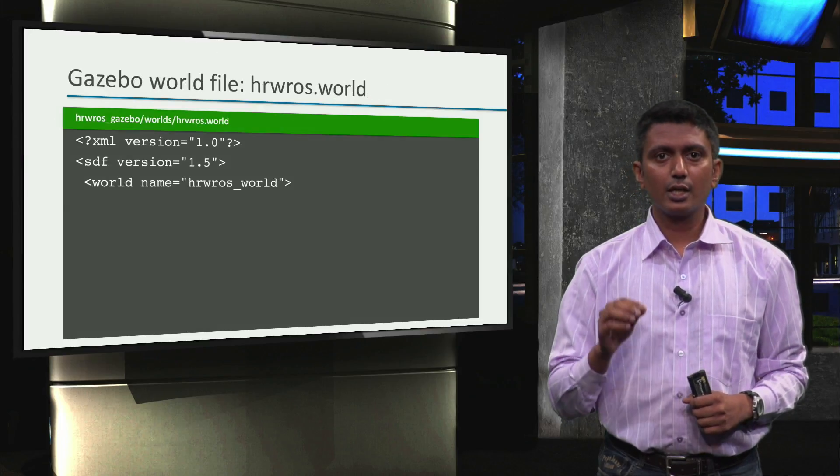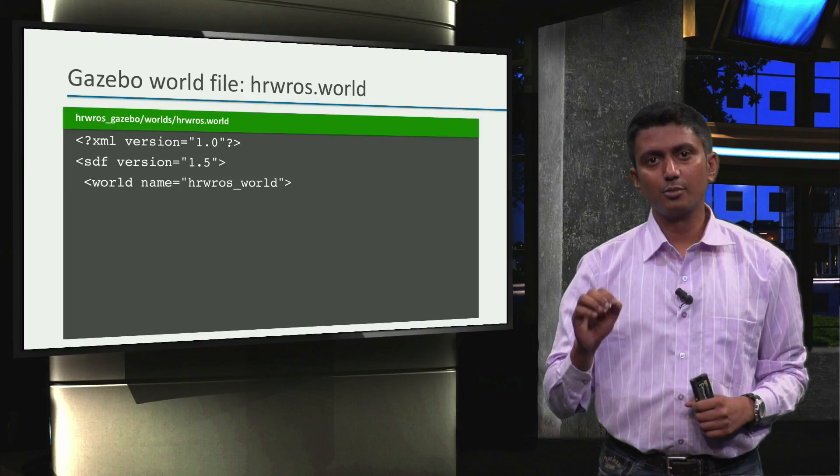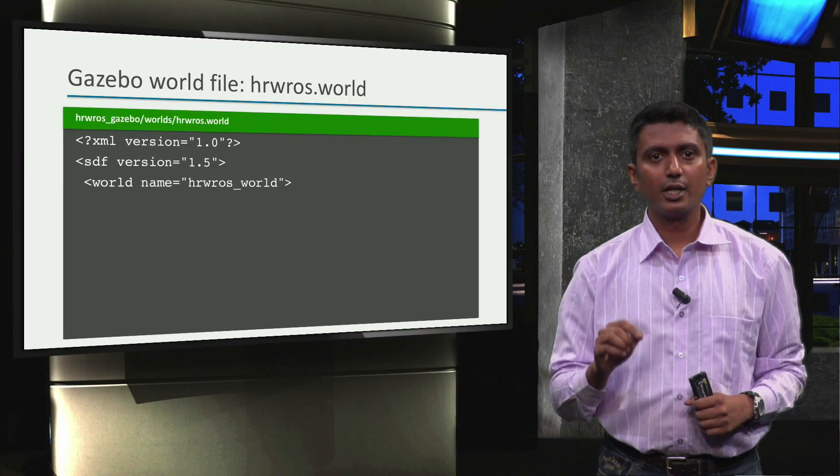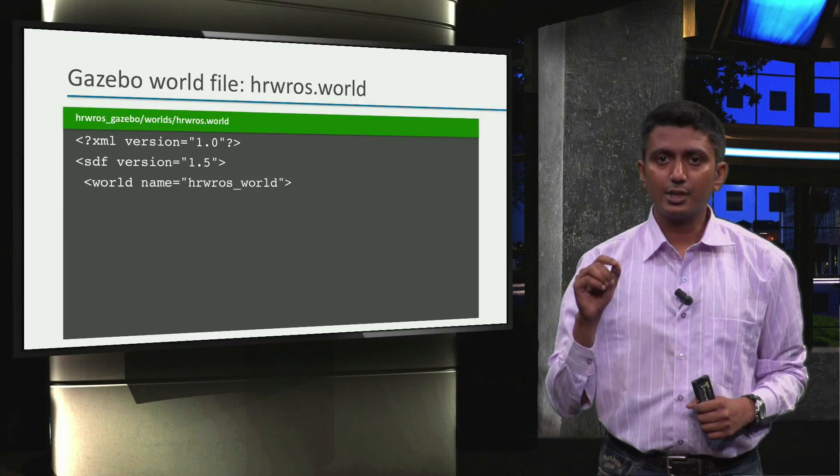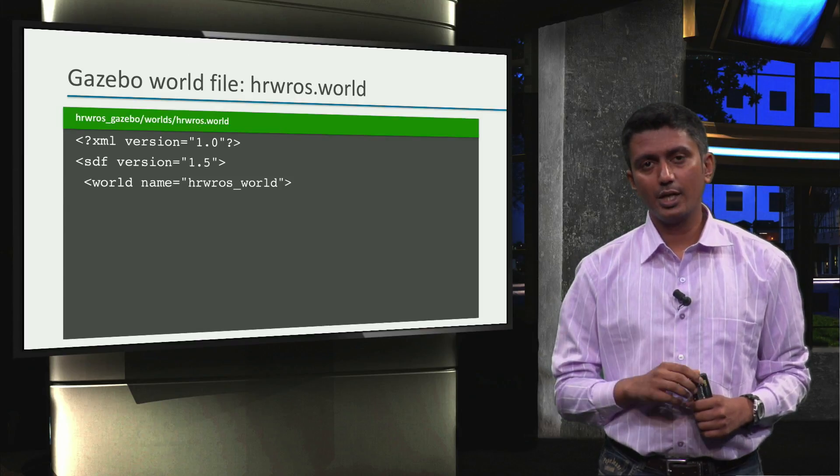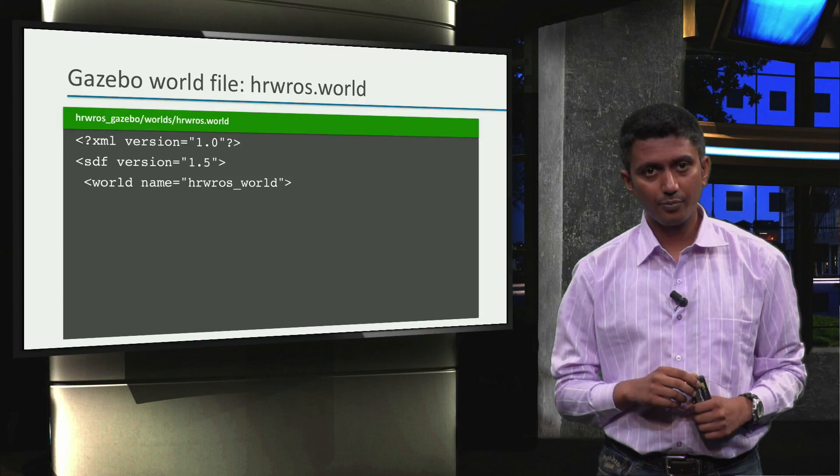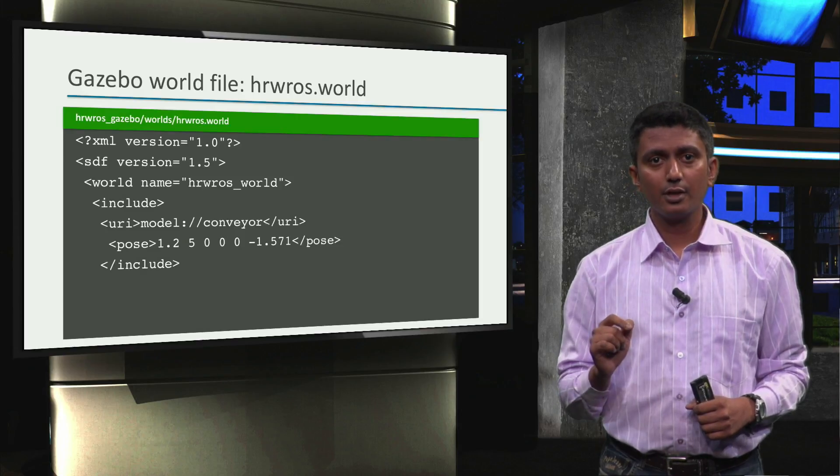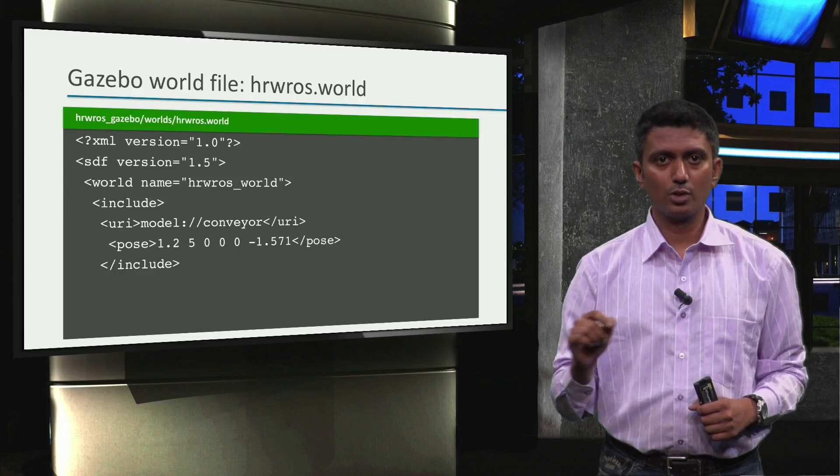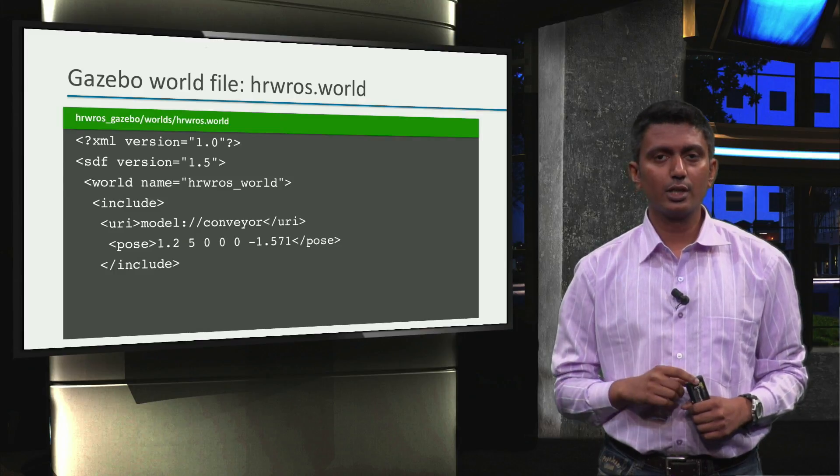So let's take a quick sneak peek at the factory simulation world file defined in the hrwros.world file. We see our world has a name called hrwros_world, and then with the include tag in SDF, we can add SDF models to our world. Here is how the conveyor is added.